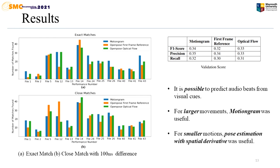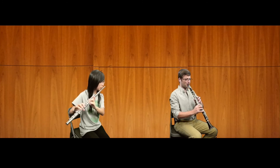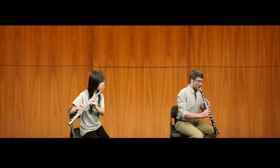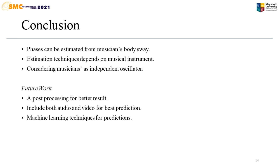Here is a quick demo of the estimation we have done on the performance. Thus, we can conclude that beat estimation can be possible from multiple musicians' body sway. The estimation technique depends upon the musical instrument. Considering musicians as independent oscillators is a very useful approach for addressing this kind of problem with pose estimation. For future work, a better post-processing technique should be introduced keeping in mind the possibility of changing tempo. Including both audio and video for beat prediction will give much better output, and machine learning techniques for predictions can also be useful in this kind of scenario.